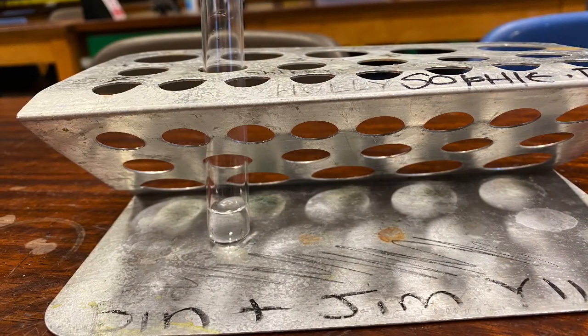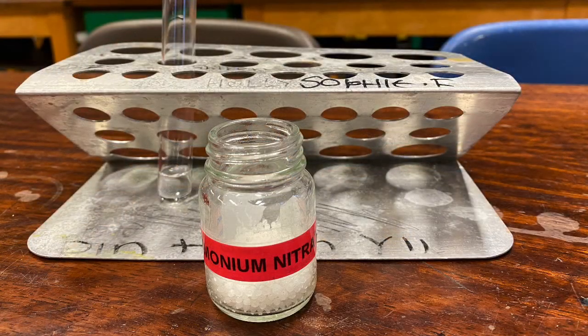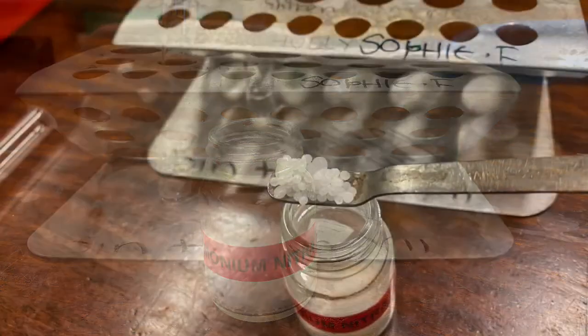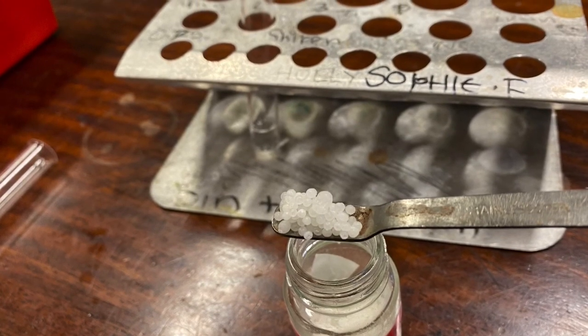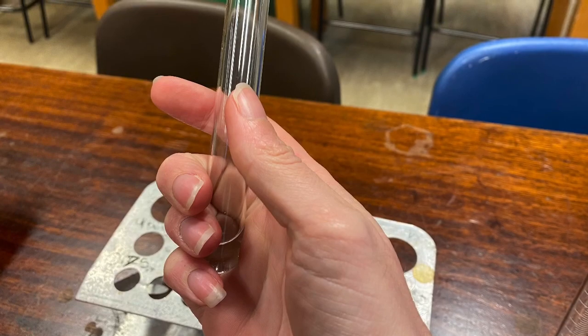For the third experiment, take 2 centimeters cubed of water and add it to a test tube. Then find the ammonium nitrate. Add a spatula of ammonium nitrate to the test tube and then use your hand to see what happens to the temperature during the reaction.